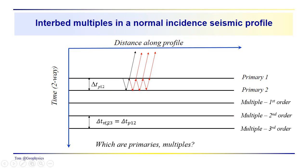This two-way travel time for the primaries, one and two, is going to be equal to the two-way time between, in this case, the second and third order multiples. It should be equal to this same delta T.